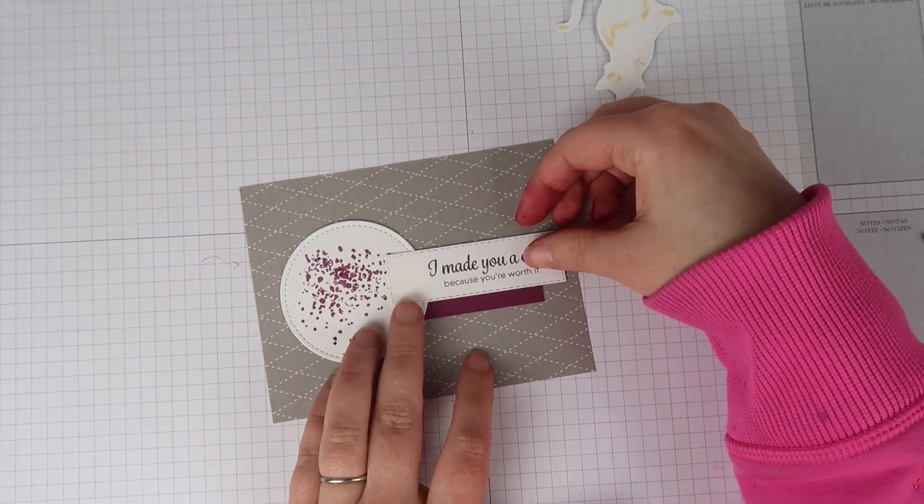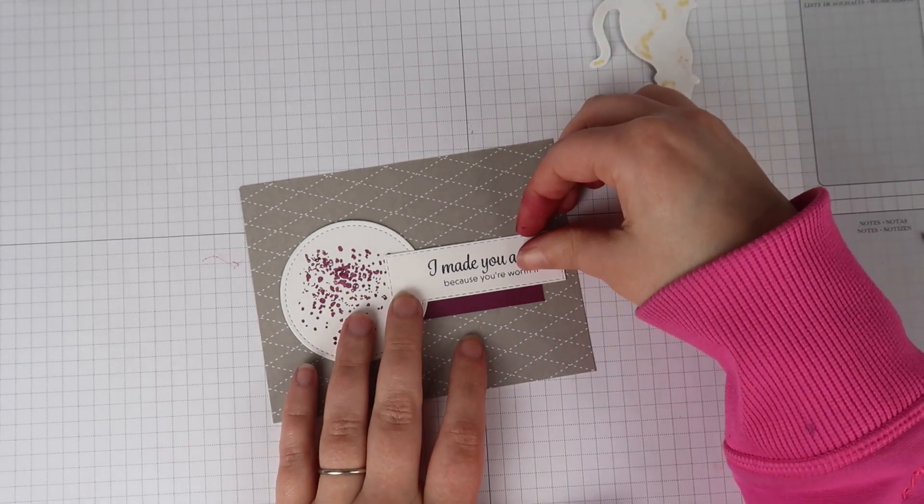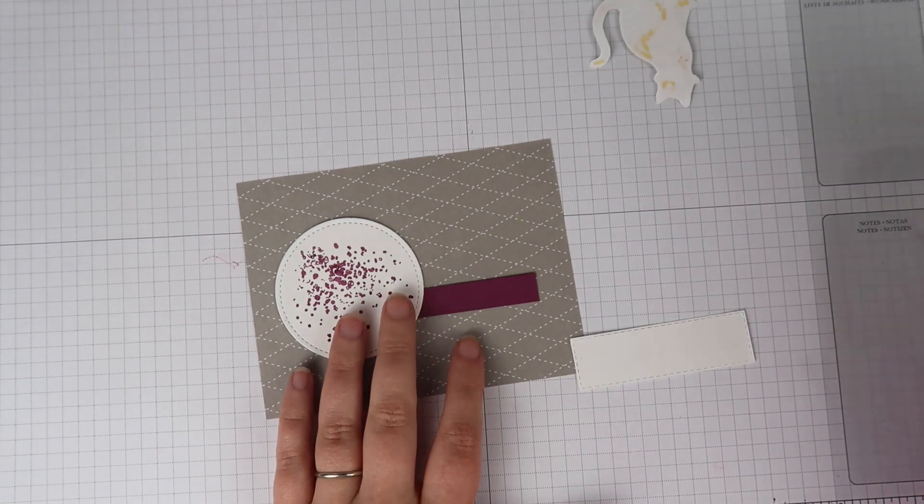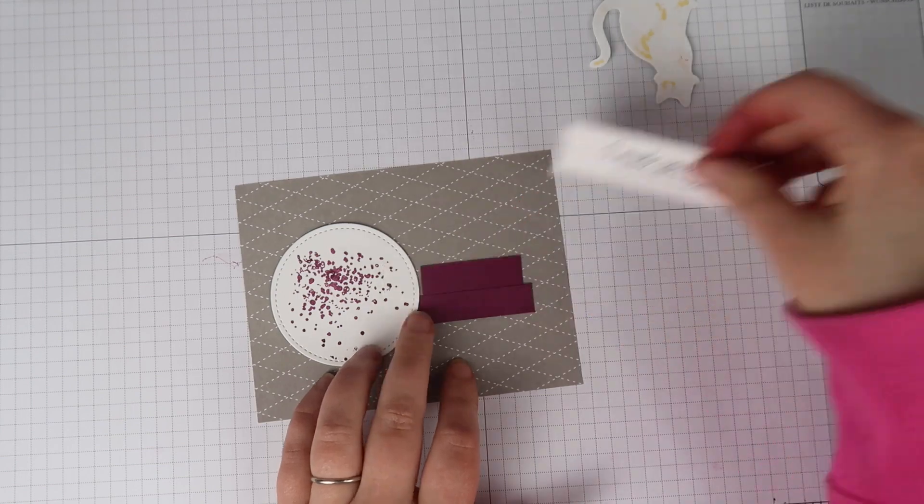When I stamped my sentiment, you can see how I left a little bit of room on the left. That was intentional so that I could hang my cat over that a little bit. So when I was putting my sentiment down,